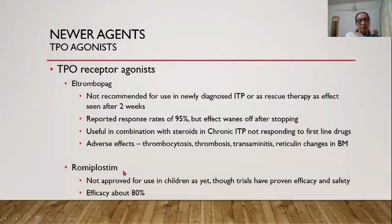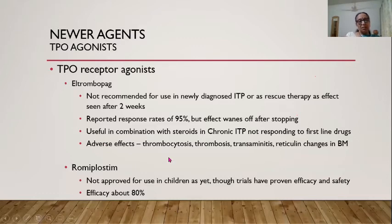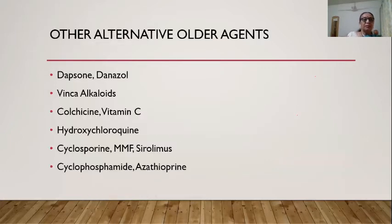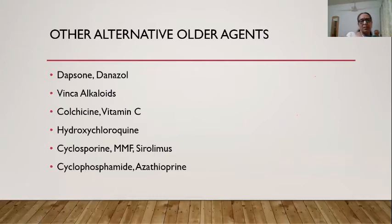Eltrombopag has significant adverse effects: thrombosis, transaminitis (very common), and long-term myelofibrosis. Romiplostim is given subcutaneously weekly, then fortnightly, then monthly, but is not yet recommended for ITP. These drugs must be monitored carefully — doses titrated based on platelet counts. In children below 6 years, start at 25mg/kg/day; above 6 years start at 50mg/kg/day, maximum 75mg/kg/day; taper by 25mg if counts rise, and stop if platelets exceed 4 lakhs. Other alternatives tried include dapsone, danazol, vincristine, colchicine, vitamin C, hydroxychloroquine, cyclosporine, mycophenolate, sirolimus, cyclophosphamide, and azathioprine.